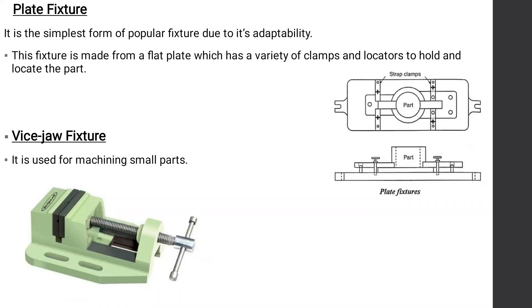First, plate fixture — what is a plate fixture? It is the simplest and most popular form of fixture due to its adaptability. The basic fixture is made from a flat plate which has a variety of clamps and locators to hold and locate the part. It is useful for most machining operations.